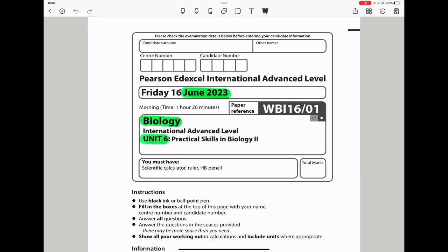Welcome to the Chemistry, Biology, and Math Revision Hub. Today we're doing the International A-Level Biology Unit 6 for June 2023. Let's begin with the first question.